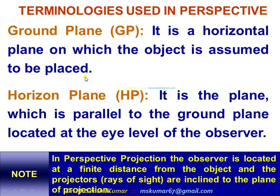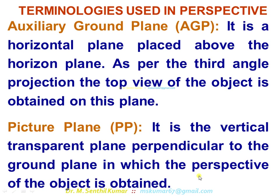Now we see the terminology. Ground plane GP: it is the horizontal plane on which the object is assumed to be placed. Horizontal plane HP: it is a plane parallel to the ground plane located at the eye level of the observer. Note — in perspective projection, the observer is located at a definite distance from the object and the projectors or rays of sight are inclined to the plane of projection. Auxiliary ground plane AGP: it is a horizontal plane placed above the horizontal plane; as per third angle projection, the top view of the object is obtained on this plane. Picture plane PP: it is a vertical transparent plane perpendicular to the ground plane in which the perspective image of the object is obtained.